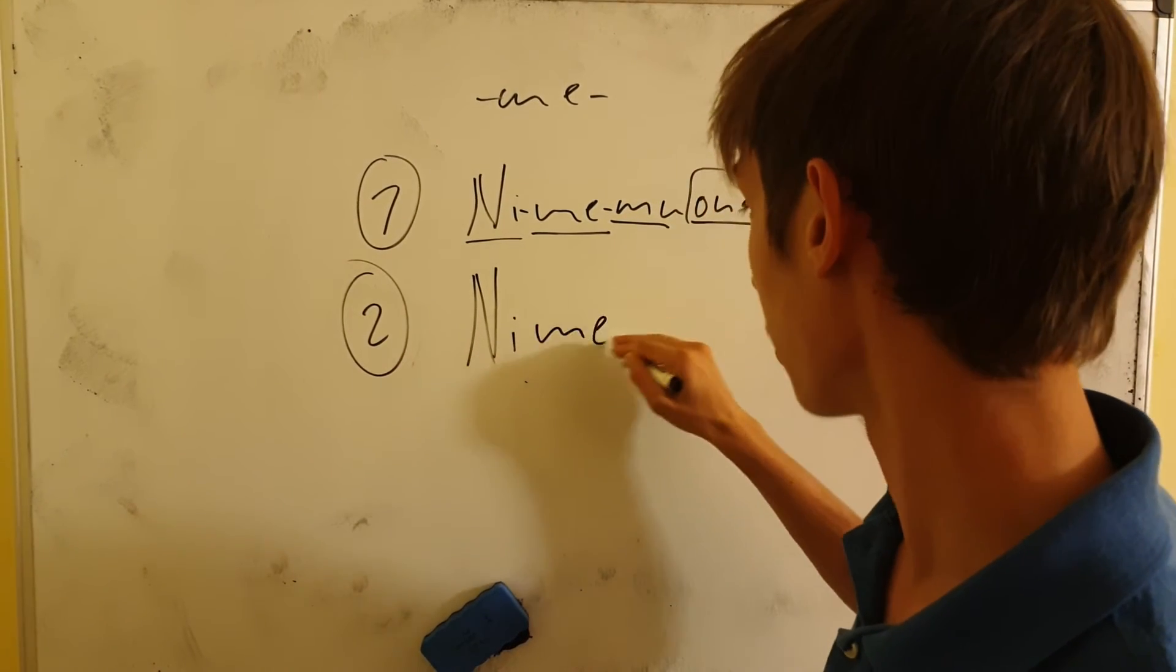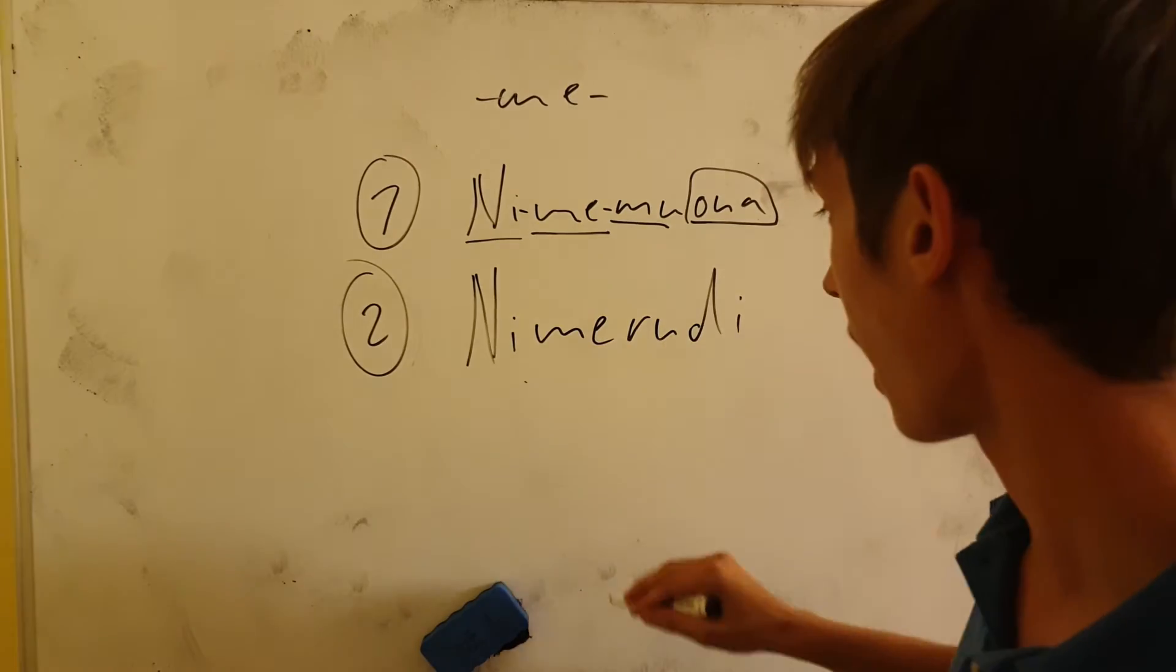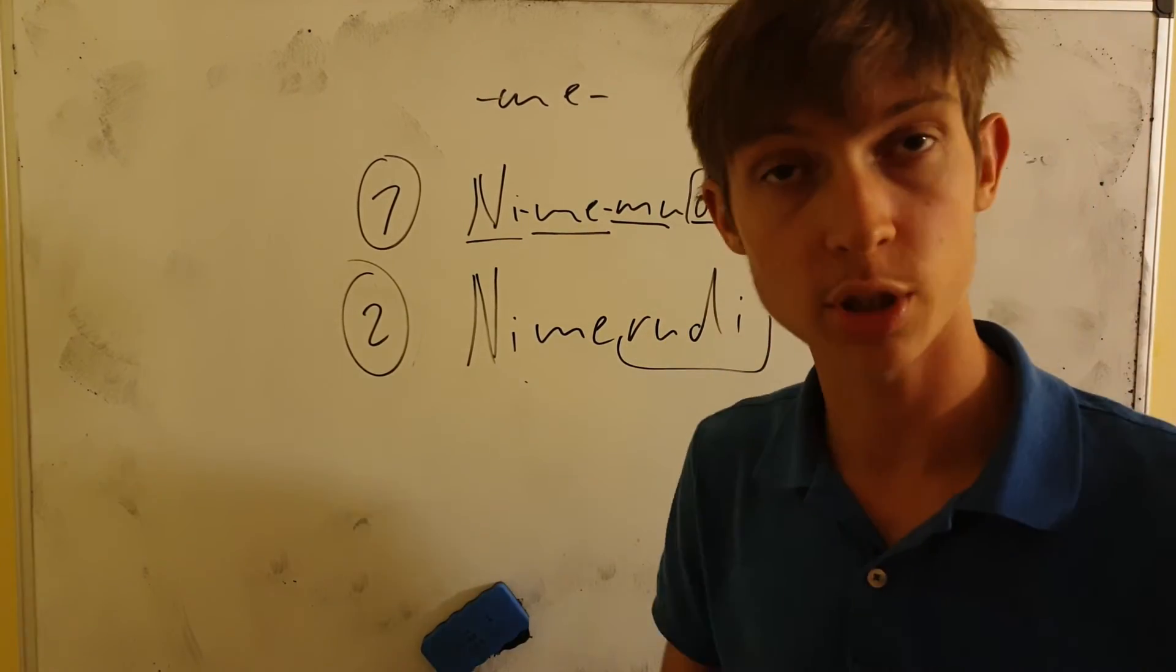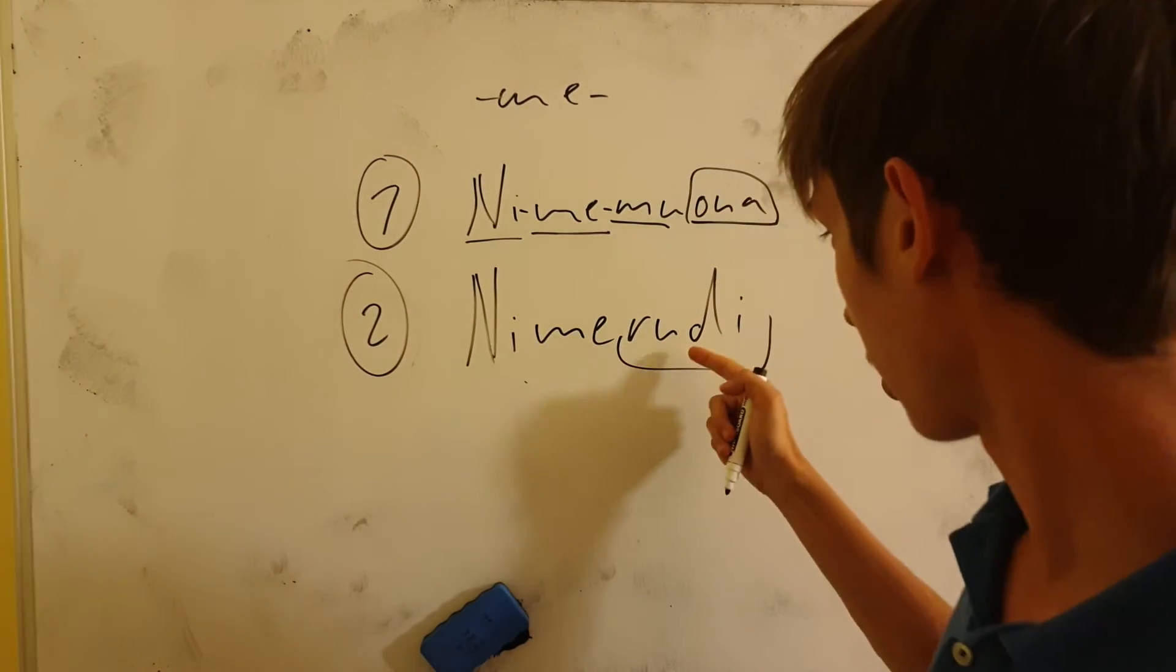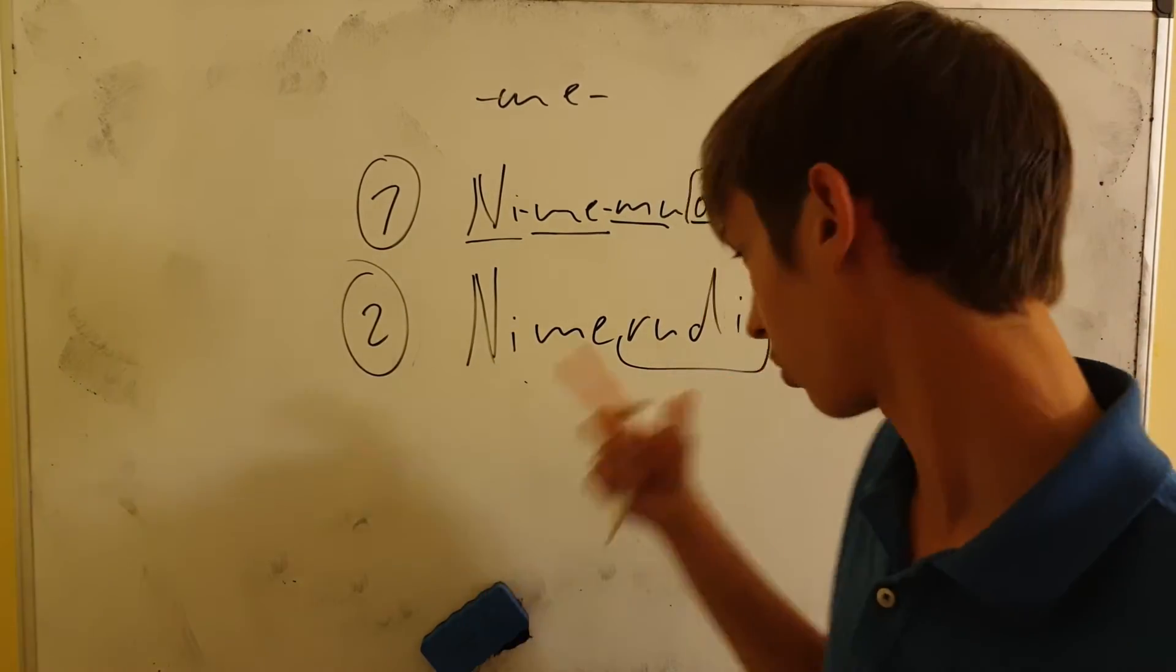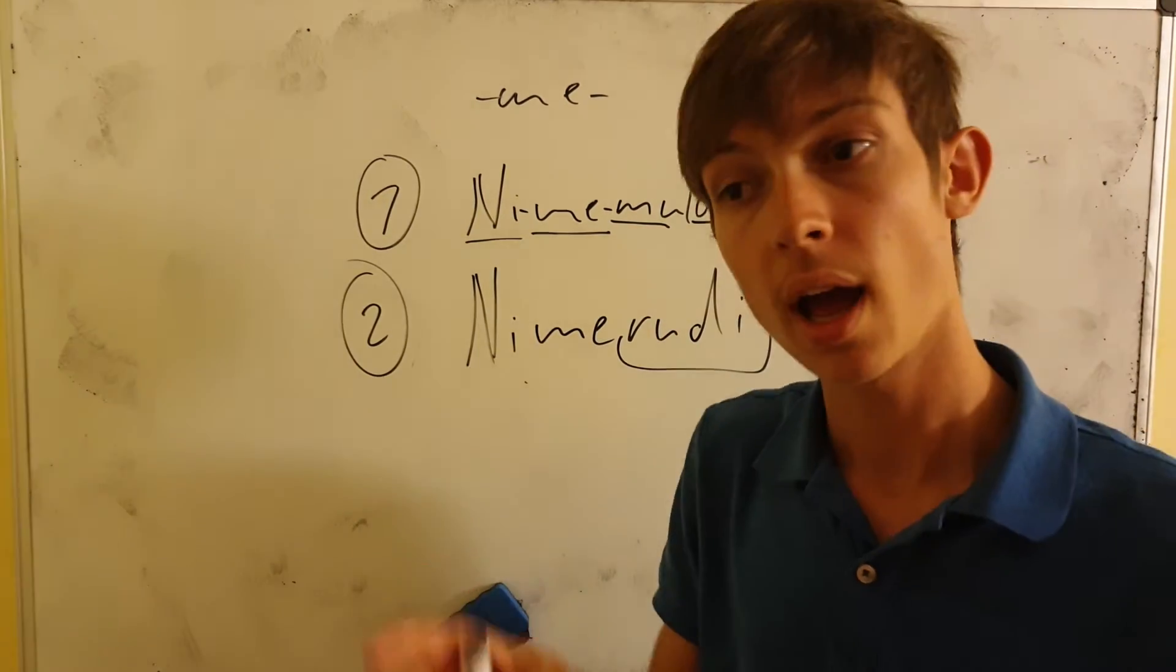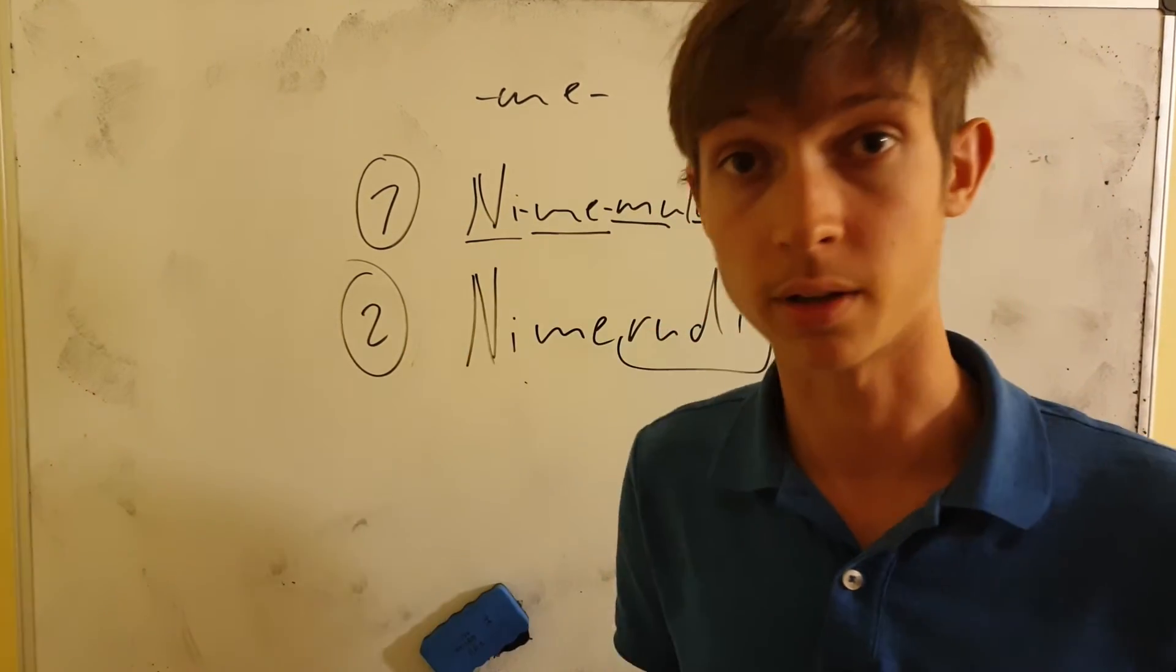Now, nimerudi. Nimerudi is simpler. This is simpler. Why? Our word is rudi, which is kurudi. The conjugated form of kurudi is rudi. Of course, you just take off that ku. And what does that mean? It means return. It means come back.